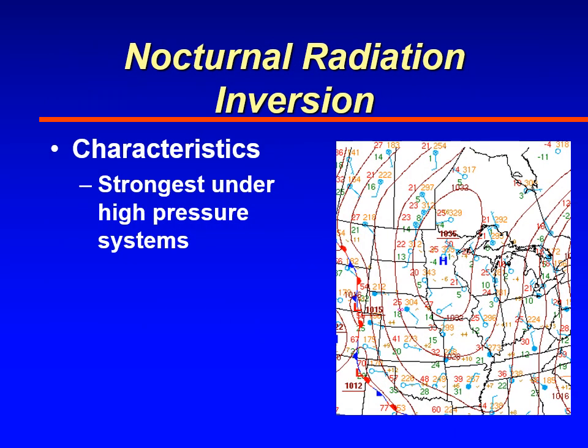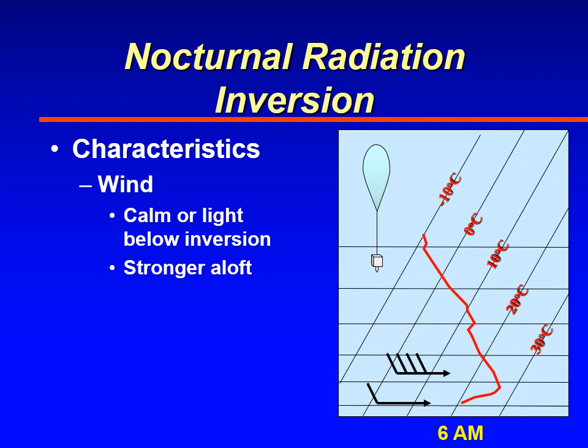Temperature inversions usually occur under high-pressure conditions at the surface. With a big high-pressure system you'll more than likely have a strong inversion, because high pressure typically brings clear skies aloft. These conditions also feature light surface winds, while winds aloft may be 30 to 40 knots, depending on the strength of the inversion and the upper-level pressure gradient.